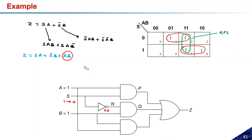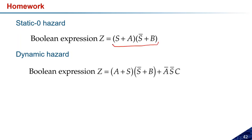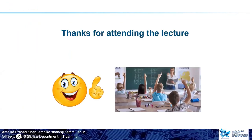This is how we can overcome or remove hazards by adding redundant prime implicants. For homework: try to understand the static-zero hazard using the expression Z = (S + A)(S̄ + B), and for dynamic hazard, a combination of both POS and SOP forms is needed. Try to solve these two questions and remove the hazards. This is the end of the digital logic module.